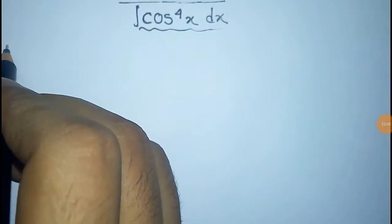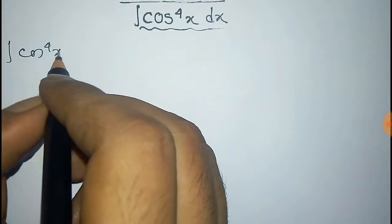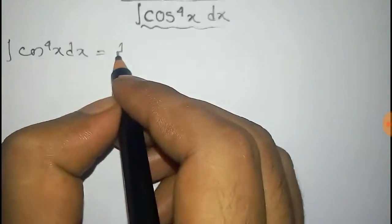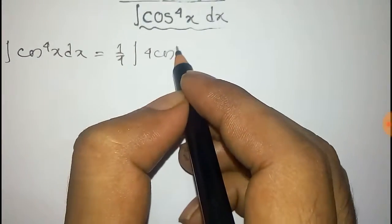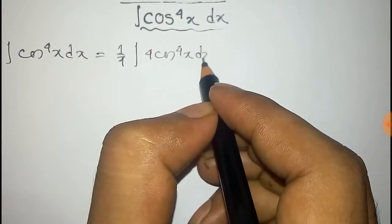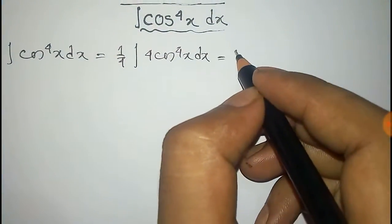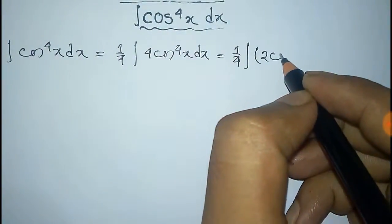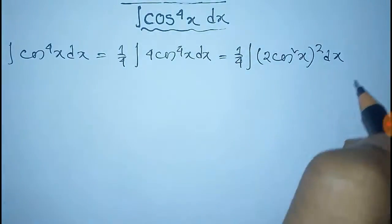We have to integrate cos to the power 4x dx. Taking one fourth common, it becomes one fourth integral of 4 cos to the power 4x dx. We can write 4 cos to the power 4x as 2 cos square x whole square into dx.